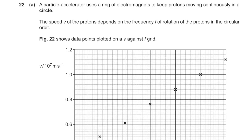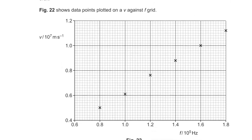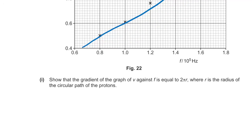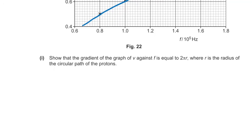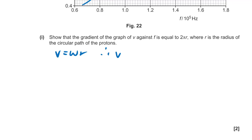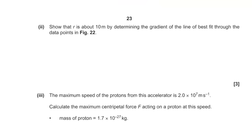Question 22: a particle accelerator uses a ring of electromagnets to keep protons moving in a circle at speed v. A graph of v against f gives a straight line. Explain why the gradient equals 2πr: because v = ωr = 2πfr, so v/f = 2πr — the gradient of v vs f.